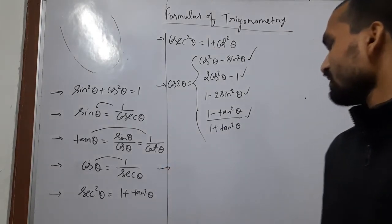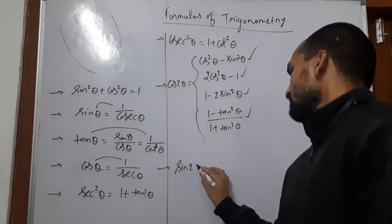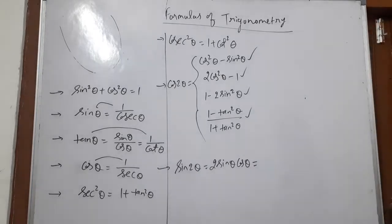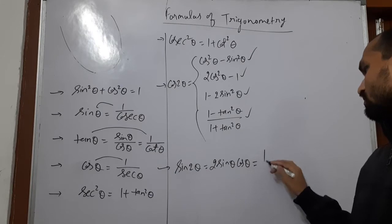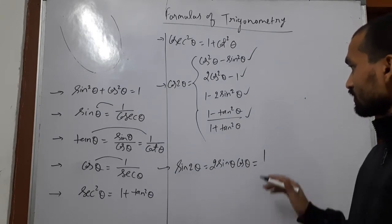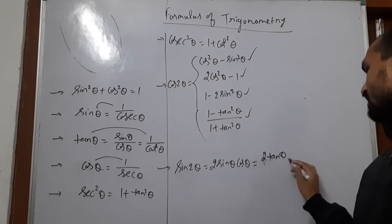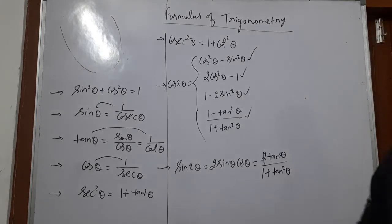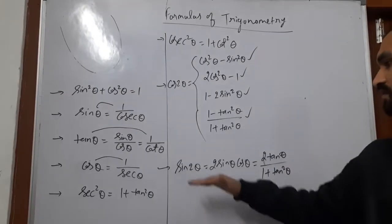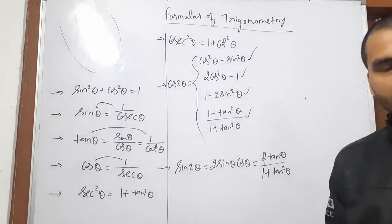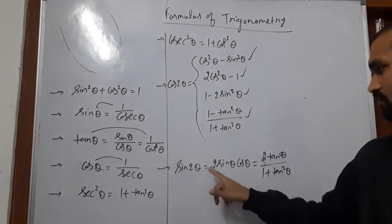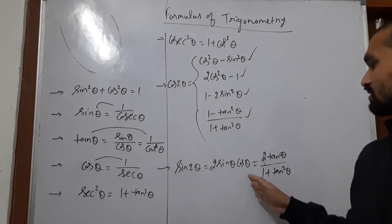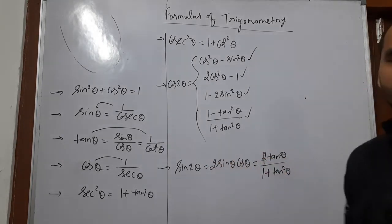The next formula is sin 2 theta. Sin 2 theta is equal to 2 sin theta into cos theta, and sin 2 theta is also equal to 2 tan theta upon 1 plus tan square theta. There are 2 formulas of sin 2 theta: the first one is 2 sin theta cos theta, and the second one is 2 tan theta upon 1 plus tan square theta.